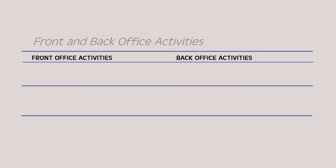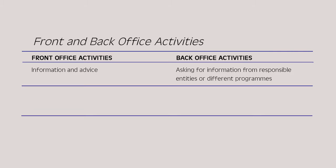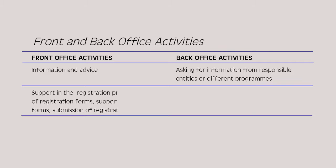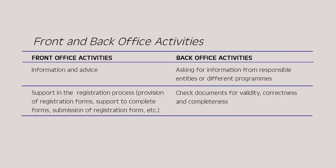For example, front office activities could involve providing information and advice to beneficiaries, while back office activities involve asking for information from responsible entities or different programs. In another example, front office activities could involve supporting beneficiaries with the registration process, and the corresponding back office activities would be to check documents for validity, correctness, and completeness.